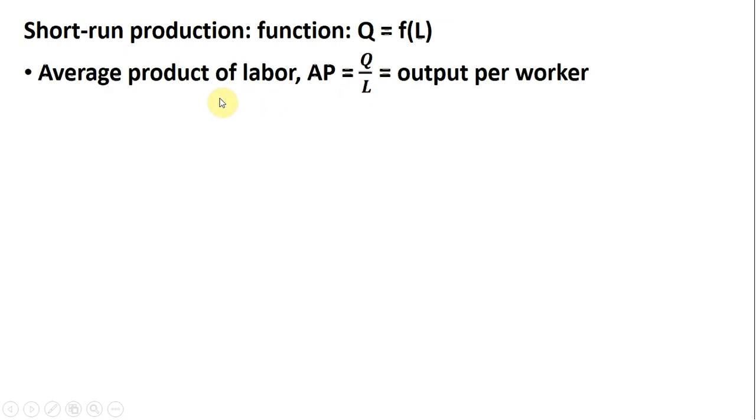The average product of labor is defined as the quantity of output divided by the number of workers that produce that output. This just means output per worker.